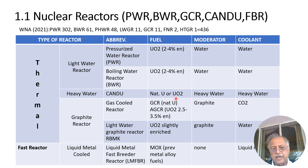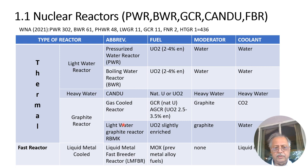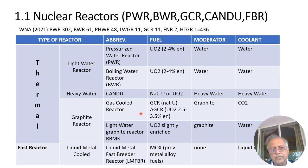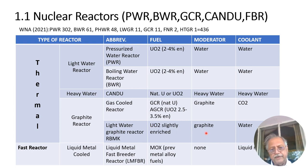Heavy water reactors originated in Canada — the CANDU, or Canadian Deuterium Uranium reactor — a natural uranium design using D2O heavy water as both moderator and coolant. Graphite reactors were historically first developed in the United Kingdom: the GCR Magnox reactors use graphite as moderator and carbon dioxide gas as coolant with natural uranium, later evolving to the advanced gas-cooled reactor with UO2 fuel enriched to 2.5–3.5%. Another graphite reactor is the Russian RBMK, which uses slightly enriched UO2 with graphite moderator but water coolant.